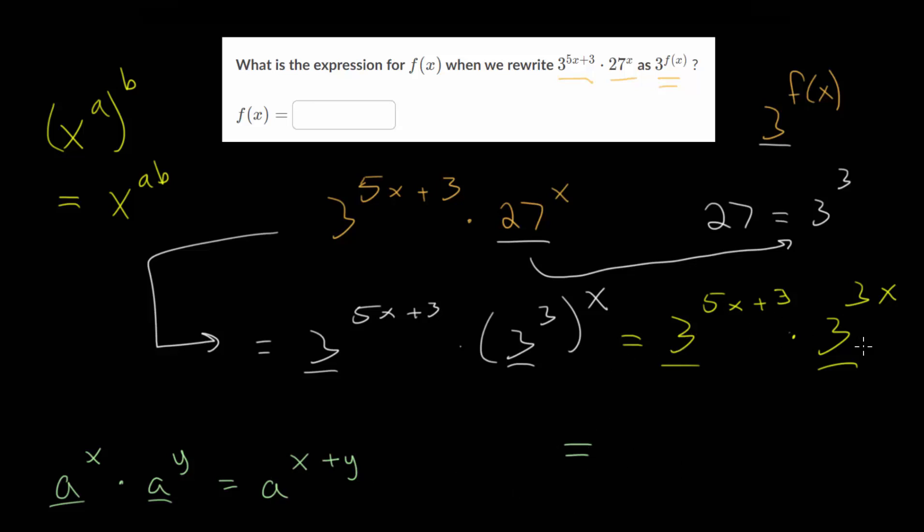So, since they have the same base, we can just add the two exponents, or exponential expressions. So, we give them the same base, and now we're taking this 5x plus 3, and we're going to add it to the 3x, all in the exponent. And, finally, we can simplify this. Since we can just add like terms, 5x plus 3x, that's 8x. So, we have 3 to the 8x plus 3.